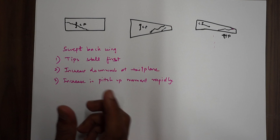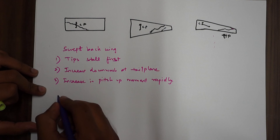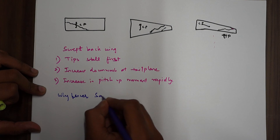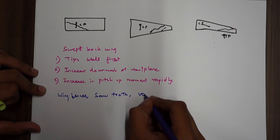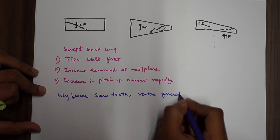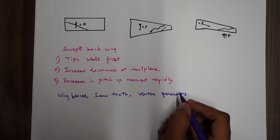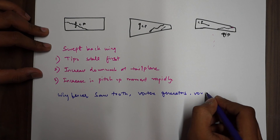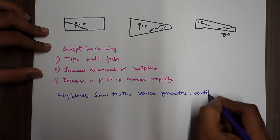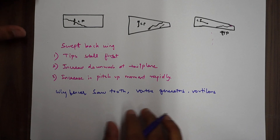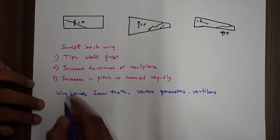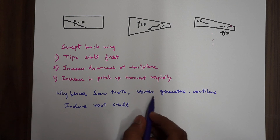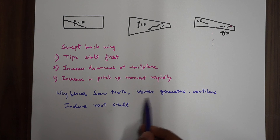To avoid these characteristics, we have a few methods. As discussed in the previous video: wing fences, sawtooth leading edges, vortex generators, and vortilons. Please refer to the previous video to know about all of these in detail.